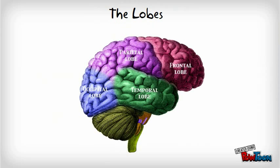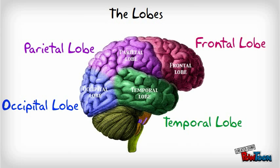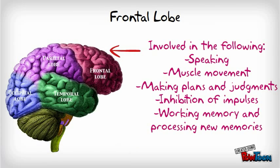The four lobes of the cerebral cortex are the frontal lobe, parietal lobe, occipital lobe, and temporal lobe. The frontal lobe is involved in speaking, muscle movement, making plans and judgements, inhibition of impulses, and working memory and processing new memories.